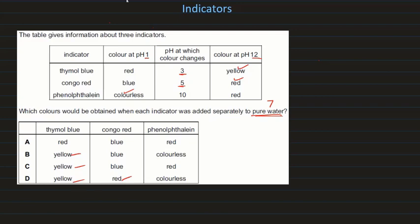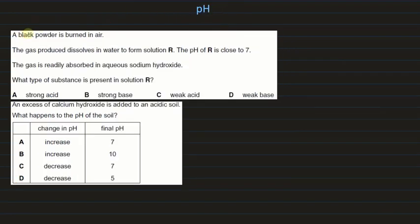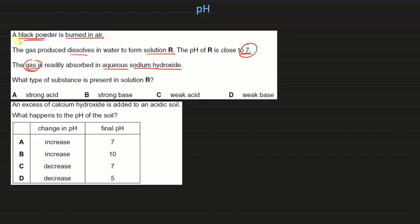A black powder is burnt in air; the gas produced dissolves in water to form solution R. The pH of R is close to 7, and the gas is readily absorbed in aqueous sodium hydroxide — so the gas must be acidic. Since the pH is close to 7, it is not a strong acid. Therefore, the substance present in R is a weak acid.